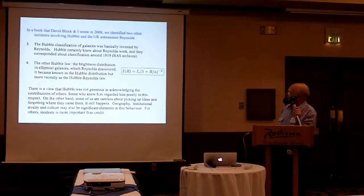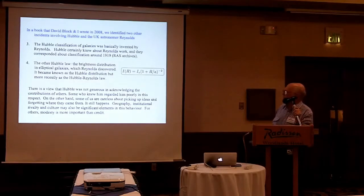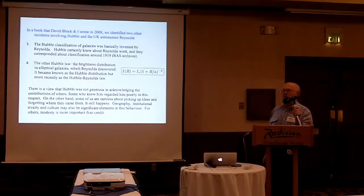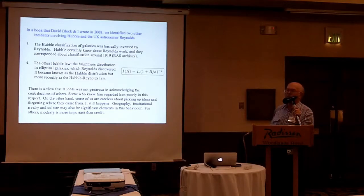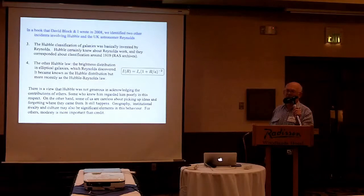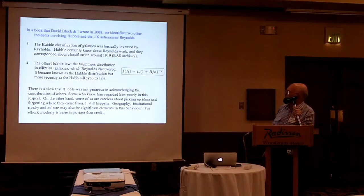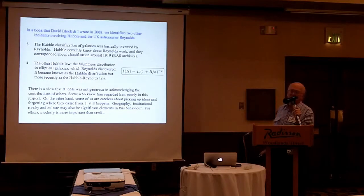In the book that Owen mentioned that Dr. Block and I wrote a few years ago, we identified two other incidents involving Hubble and the UK astronomer Reynolds. Reynolds was a so-called amateur, but in fact he was no more amateur than most astronomers in this room — a very professional operator who knew a huge amount of astronomy, had a lot of money as an industrialist, and had equipment for analysing photographic plates. He built three 30-inch telescopes, one of which ended up in Australia and was unfortunately destroyed by fire. He did a lot of photography and got quantitative results from it.